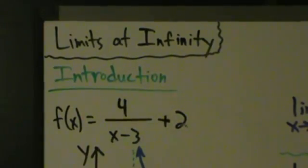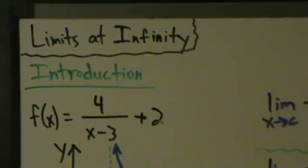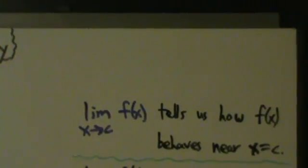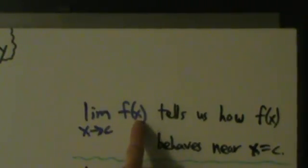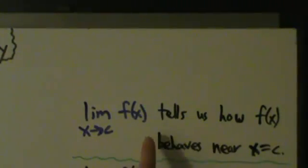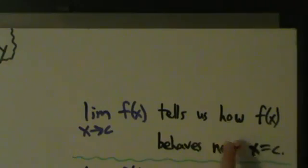Let's start talking about limits at infinity. We've been talking a lot about taking limits at points. So for example, the limit as x approaches c of f of x tells us how the function f of x behaves when x is close to c — in other words, how f of x behaves near x equals c.